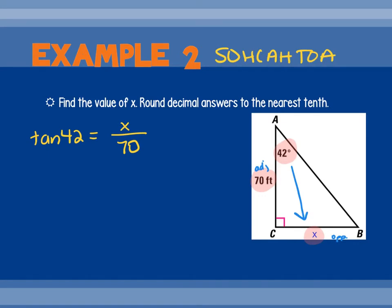So I'm going to say the tangent of 42 equals the opposite side, which is x, over the adjacent side, which is 70. Now what do you do when the numbers in the bottom? Multiply it. When the number's in the bottom, we multiply. So this would be 70 times tangent 42. Tangent 42. 63 point, nearest tenth, 63.02 would be 63.0.